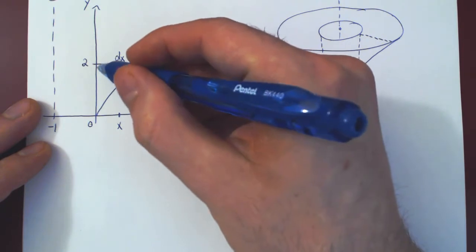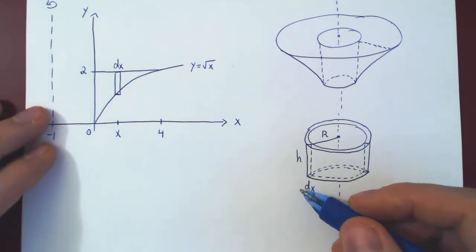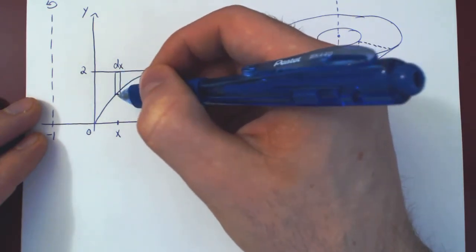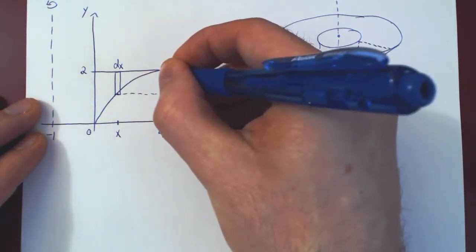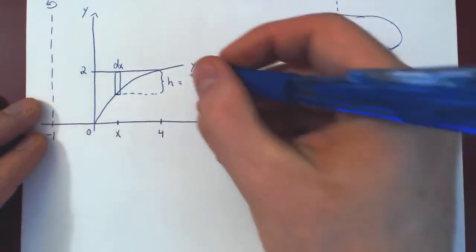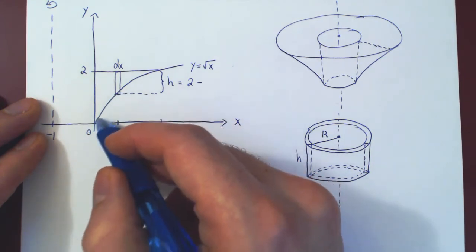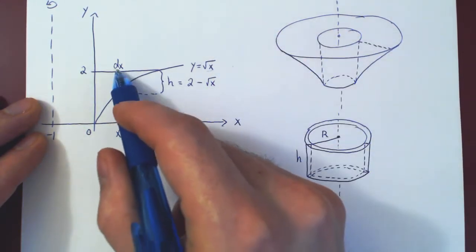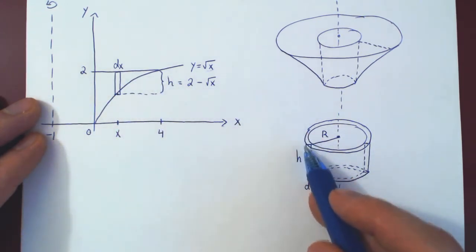The height of this rectangle is a segment along the y-axis. Because we have a dx, everything we measure must be a function of x. We have a line segment along the y-axis; to find its length, we need the larger y value minus the smaller y value. The larger y value here is constant — it's always y equals 2. The smaller y value is on the curve y equals root of x, so y as a function of x is root of x. Therefore, 2 minus root of x gives us the height of our shell.